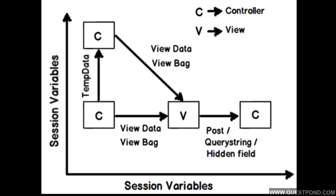In an MVC application, the program can flow from controller to a view, from controller to controller, or from view to a controller. There are different combinations possible as we move or navigate between each one of these entities. As we navigate between these entities, we would like to persist data between each of them.